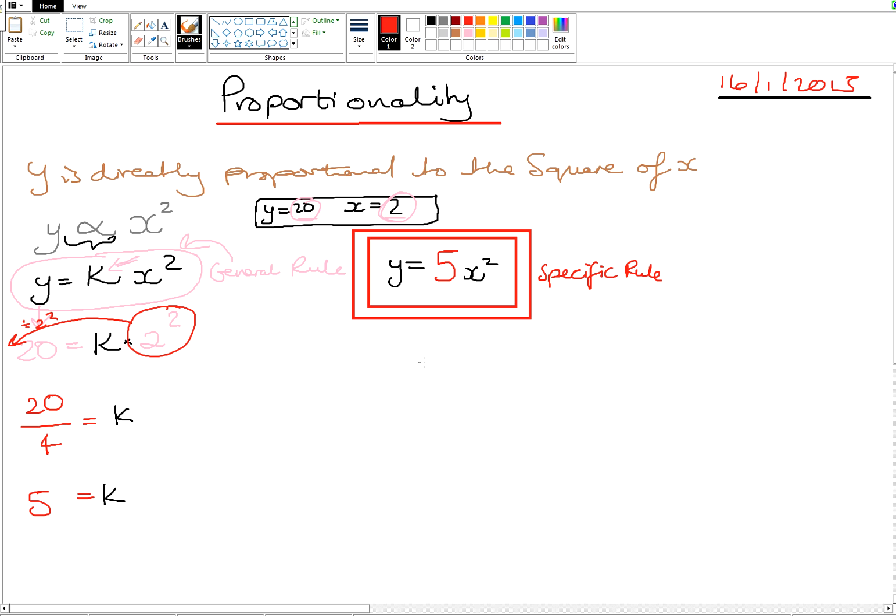Calculate the value of K, then calculate the value of Y when X is equal to 4. So now we've been told that X has the value of 4. So Y is equal to 5 times 4 squared. Y is equal to 5 times 16, which gives us an answer of 80. 5 times 10 is 50, plus another 30, that will give you 80. And that is the end of that particular question.